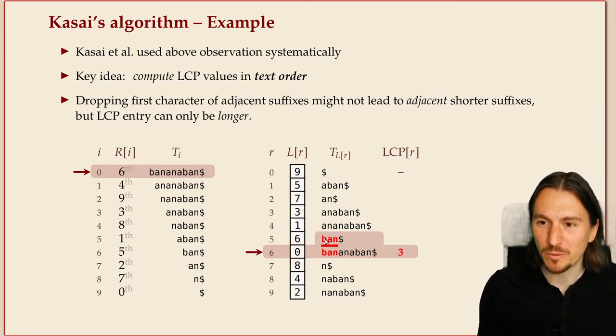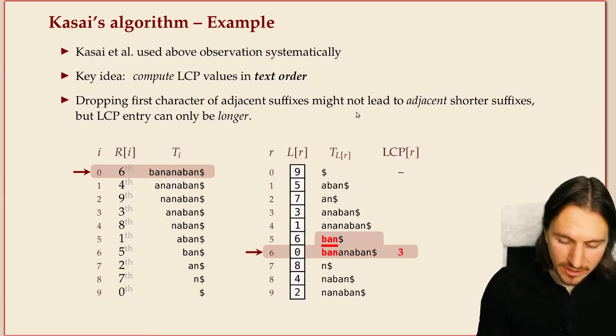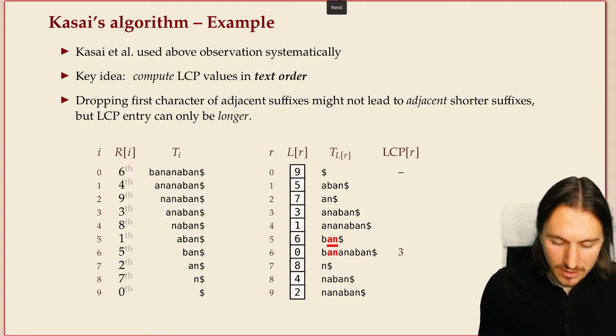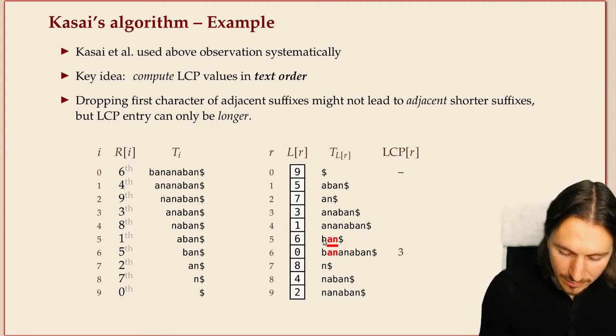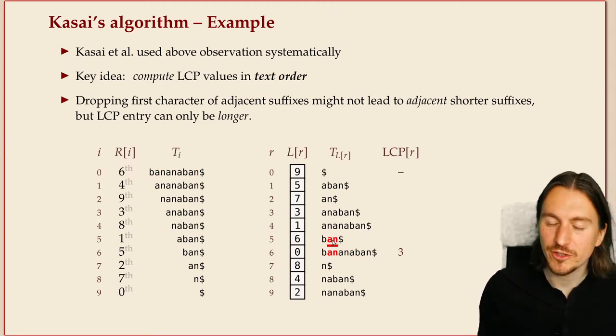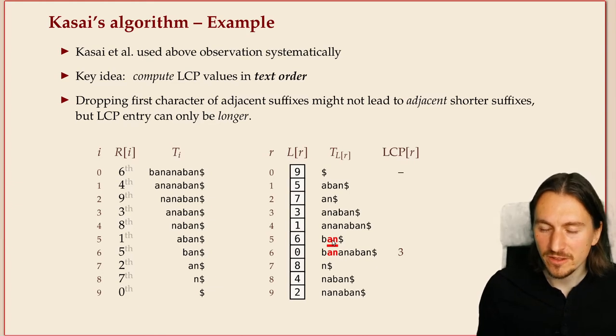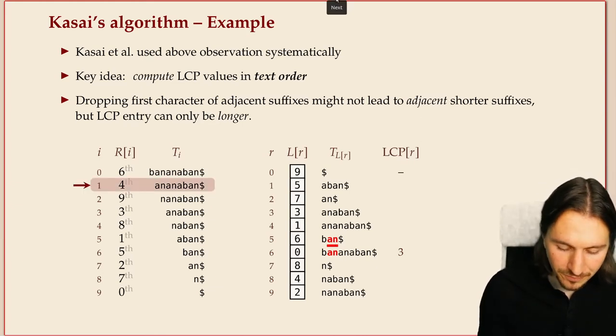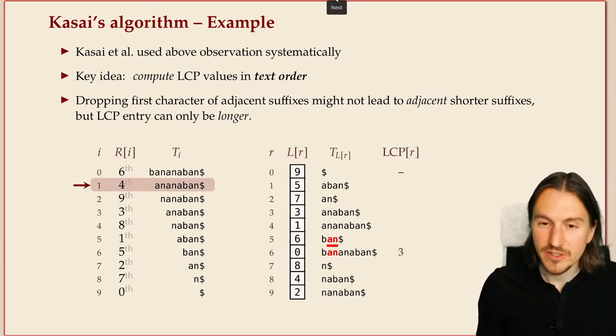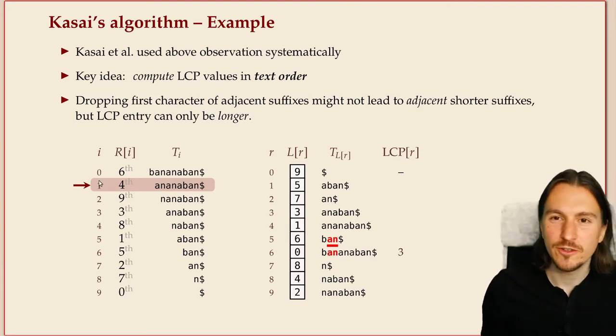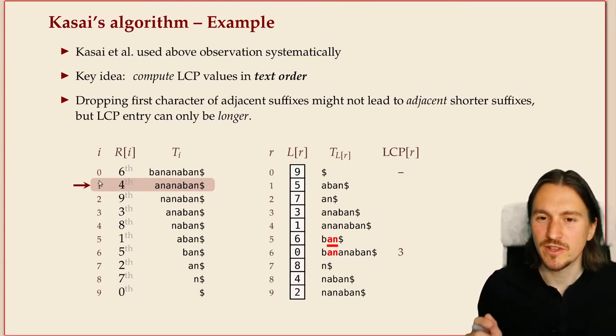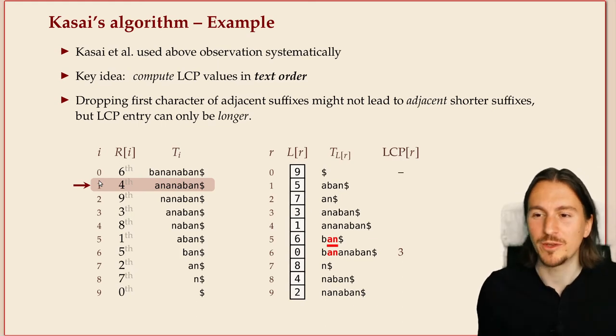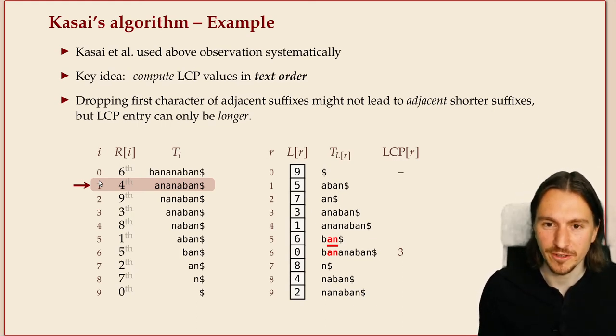Now we want to take that knowledge and learn as much from it as possible for other LCP values. And remember the idea was to chop off the first character. So what we do is if we chop off the first character, we know there's still this N that is matched and Kasai's algorithm now says, okay, you just go to the next suffix in text order that corresponds to chopping off the first character. You find where that is in the sorted list using the rank array. So you go to the right and you find this is the corresponding suffix that has the first character omitted.